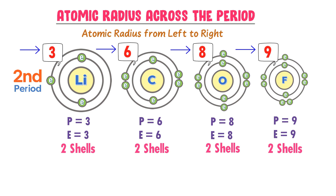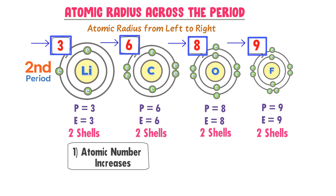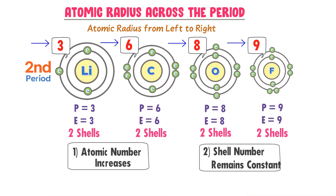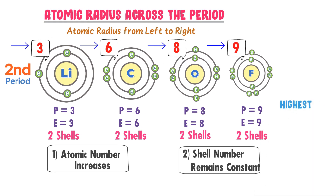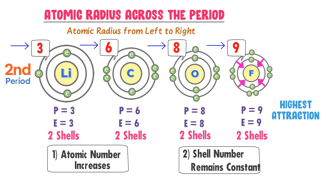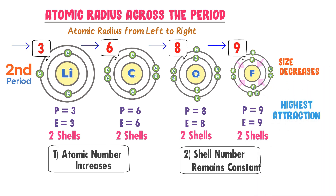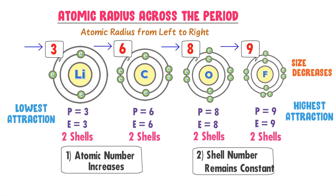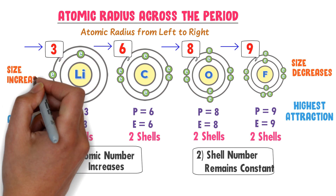As we go across the period, atomic number increases, but the number of shells remains constant. The highest attraction between protons and electrons is in the fluorine atom, because there are 9 protons and 9 electrons. Due to this highest attraction, electrons come towards the nucleus and the size of the fluorine atom decreases. On the other side, there is the lowest attraction in lithium because there are only 3 protons and 3 electrons, so electrons move away from the nucleus and the size of lithium atom increases.